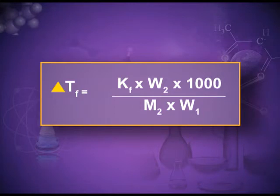Mathematically, ΔTf = Kf × (w₂ × 1000) / (M₂ × w₁). You can see that ΔTf is inversely related to the molecular mass of the solute. Using this formula you can find out ΔTf, the molecular mass of solute, or any other expression depending upon the numerical. Also keep in mind that if temperature is given in degree Celsius, you have to add 273 to convert it into Kelvin scale.